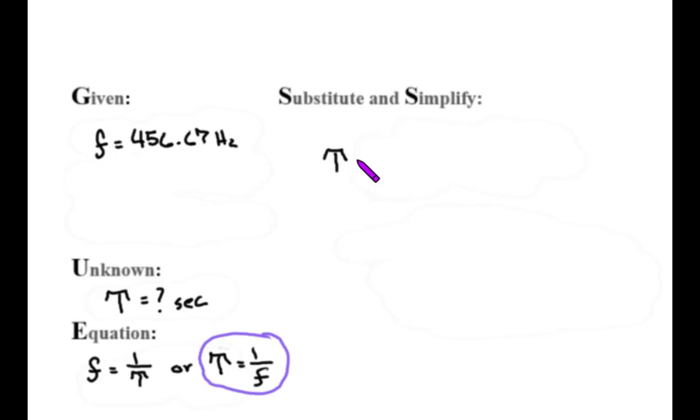So period equals one over my frequency is 456.67. Let me stick that in my calculator.